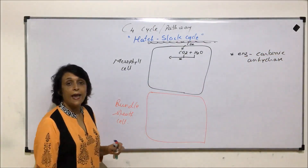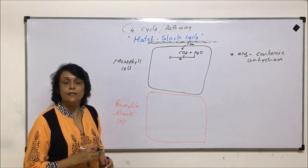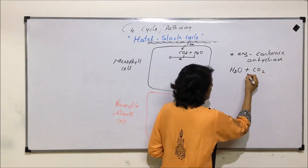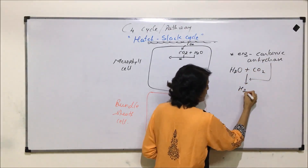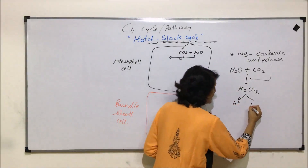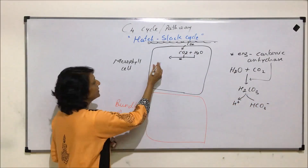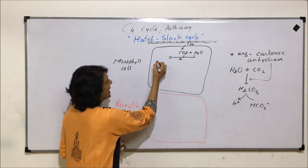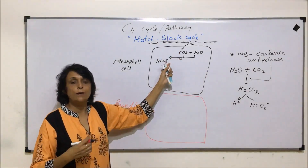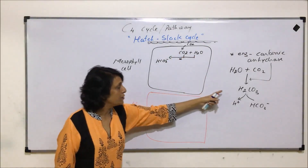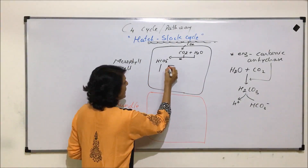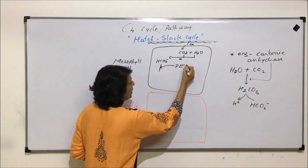Carbonic anhydrase helps in the formation of carbonic acid, and then this carbonic acid dissociates. In detail, water and carbon dioxide react in the presence of carbonic anhydrase to form carbonic acid, which then dissociates into H⁺ and bicarbonate ions. So basically, the carbon dioxide which is accepted is in the form of bicarbonate ions. This bicarbonate ion is then accepted by phosphoenol pyruvate.